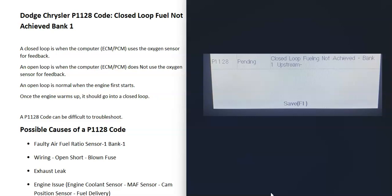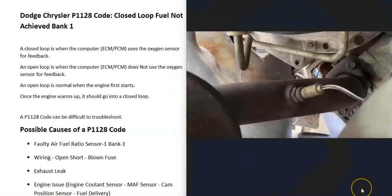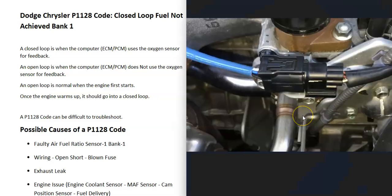The first possible cause is that the O2 sensor has just failed and needs to be replaced. If it's gone bad, it's not going to be reporting information back to the computer, and so the vehicle is never going to be able to go into a closed loop. Locate that bank one sensor one on your vehicle and test it to be sure it's working. Also keep in mind that if there's anything wrong with the wiring going to the sensor — open, short, anything like this — it's going to cause the same symptoms as a bad sensor.